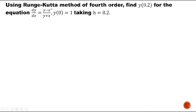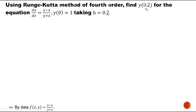Let us see a problem. Using Runge-Kutta method of fourth order, find y(0.2) — this is x₁. I need to find y(0.2) for the equation dy/dx = (y − x)/(y + x), with y(0) = 1, taking h = 0.2.